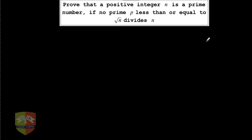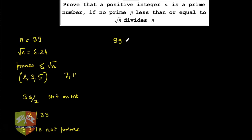In the first reading, the question looks difficult to understand, but let us take an example and understand it. The question is about how to test whether a number n is prime or not — you just need to find the root of n. Let's take the example of 99. Root of 99 is 9.94, so root n is 9.94.